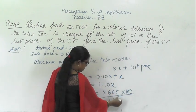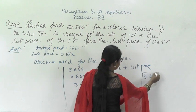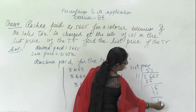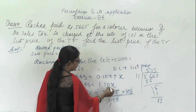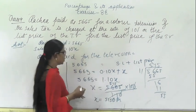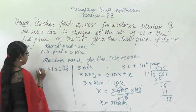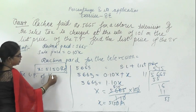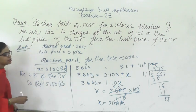Cancelling the zeros, 5665 divided by 11 gives 515, multiplied by 10 gives 5150 rupees. So the list price X is 5150 rupees. The list price of the television is rupees 5150.